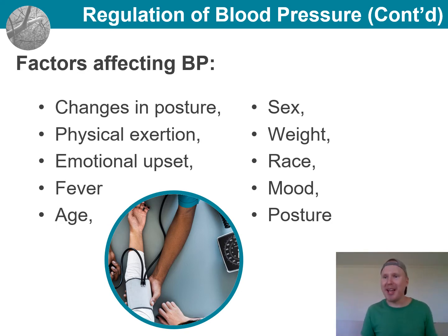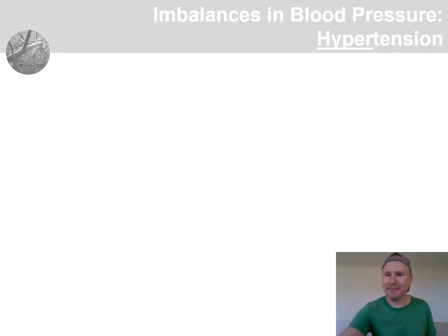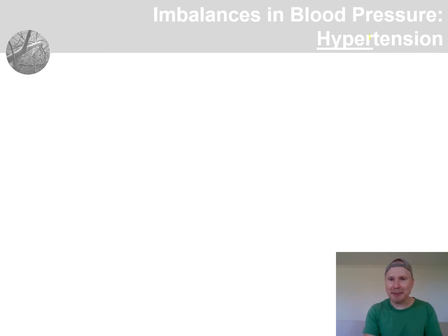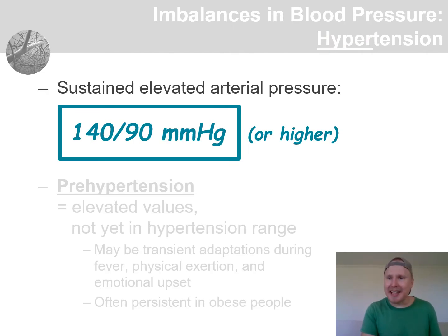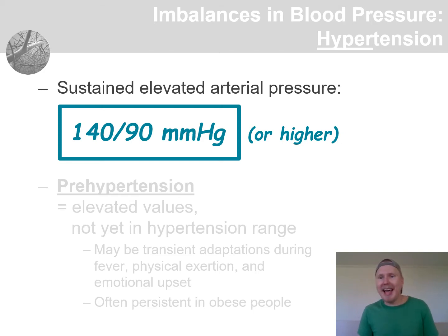Let's consider two possible larger situations where the blood pressure is off from normal, and we will start with hypertension. The key is in the prefix 'hyper.' This is a state of constant elevated blood pressure, and the cutoff point the textbook offers is 140 over 90 millimeters of mercury, and of course anything above that.